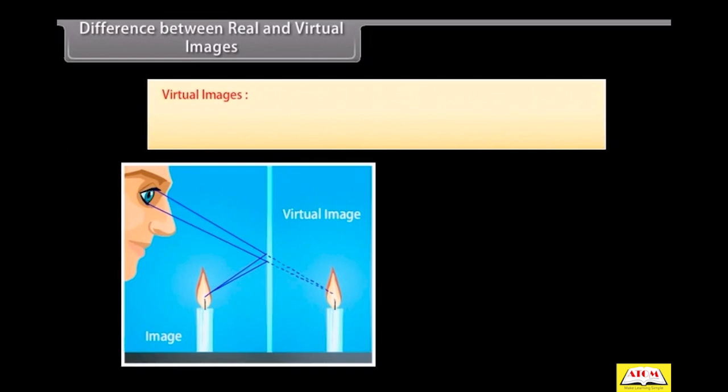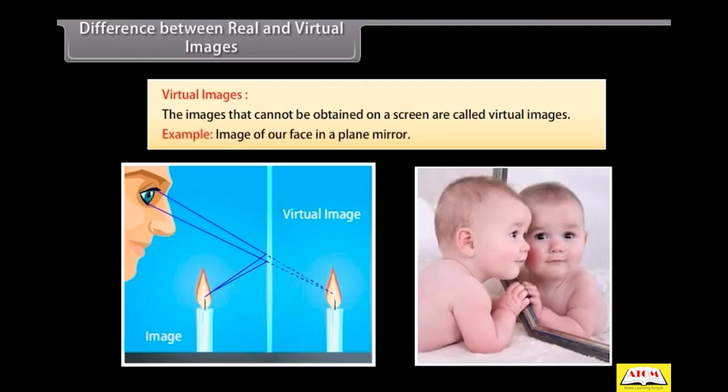Virtual images: The images that cannot be obtained on a screen are called virtual images. Example: Image of our face in a plane mirror. It is formed by concave lens.